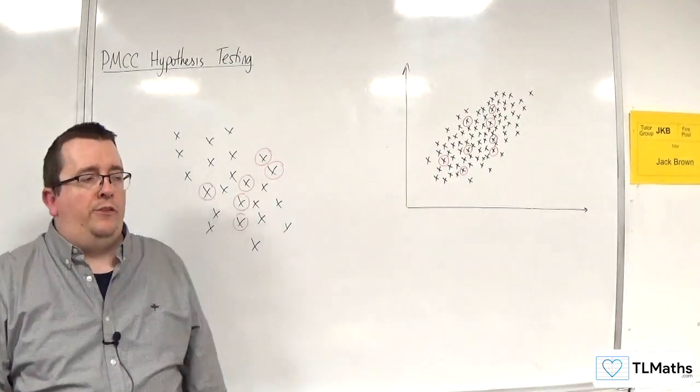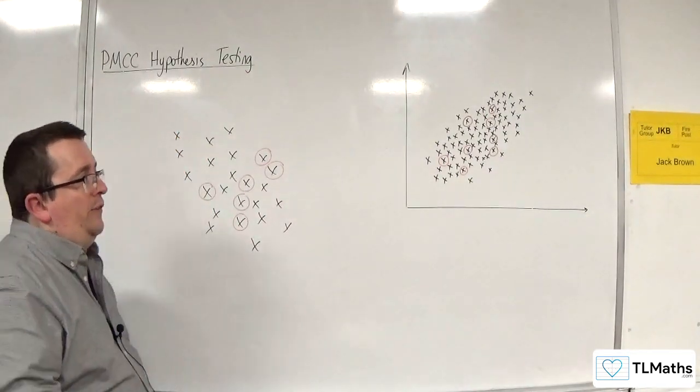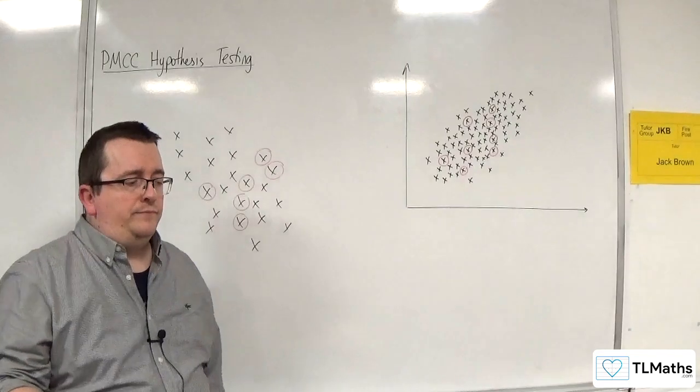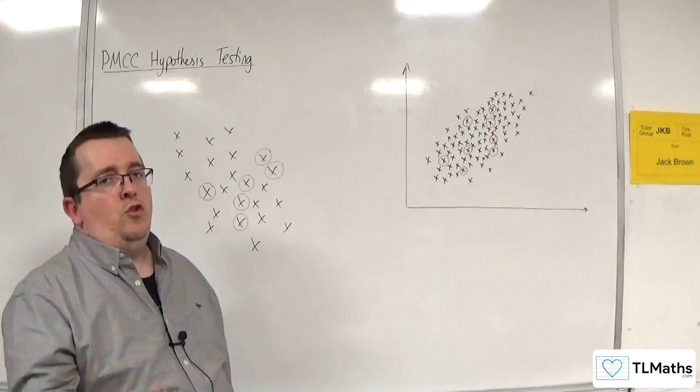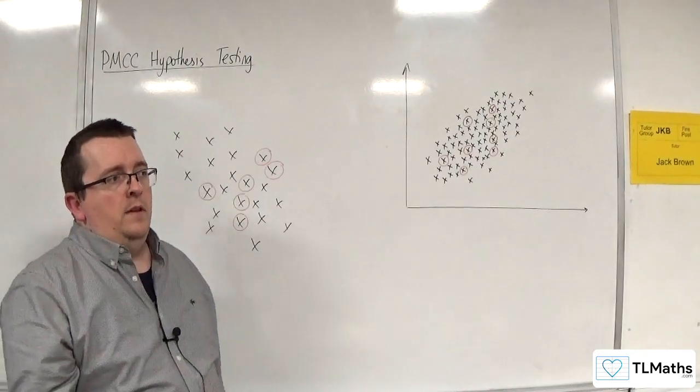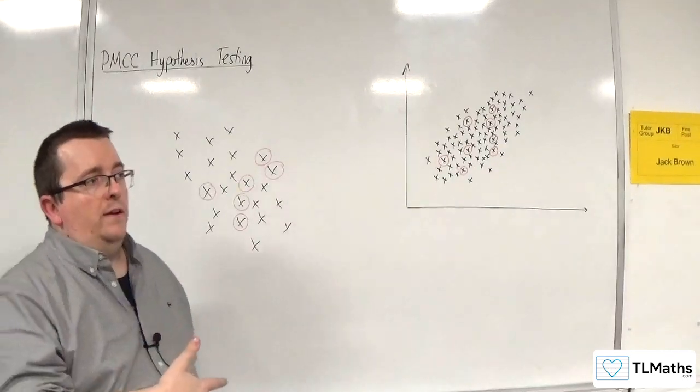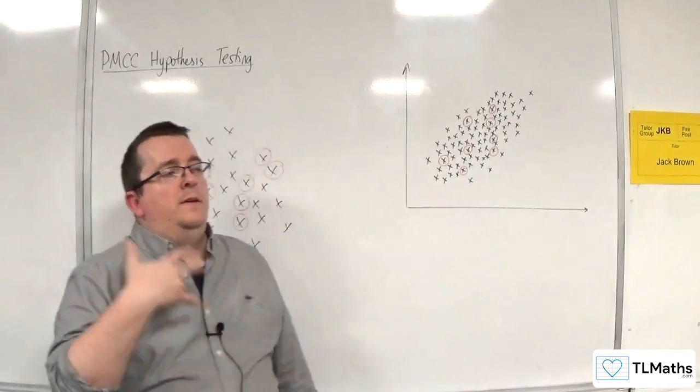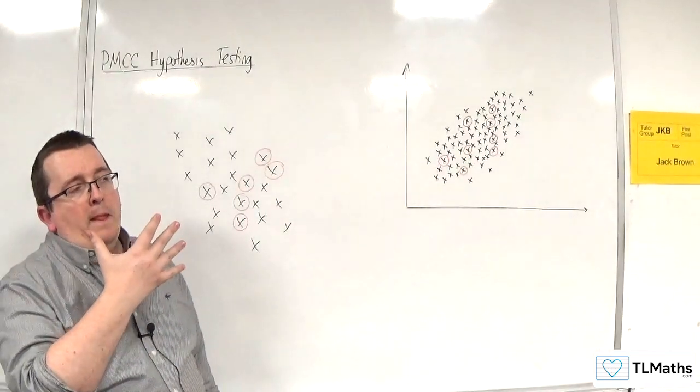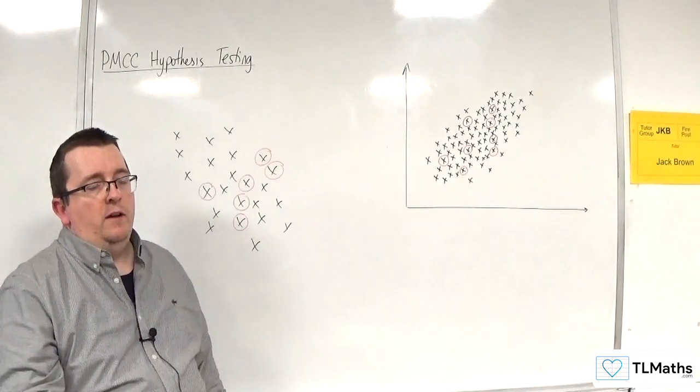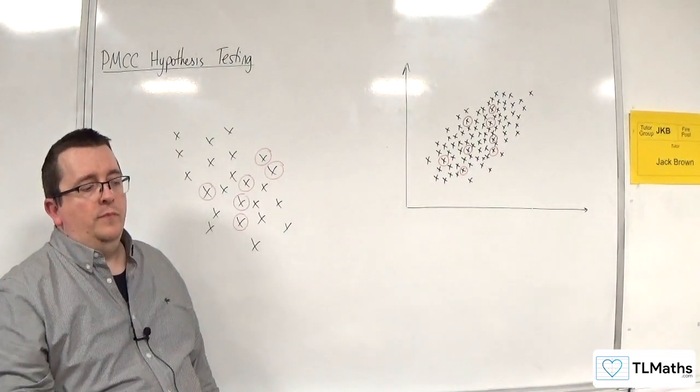So essentially what we're going to need to do is calculate the PMCC for a sample. I am then going to need to compare that against a critical value. And from that, I can then judge whether, so there's got to be this cutoff at some point, from that I can judge whether I can reject the null hypothesis or fail to reject the null hypothesis.